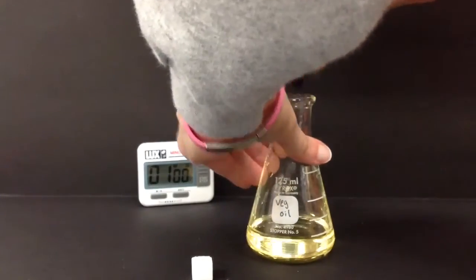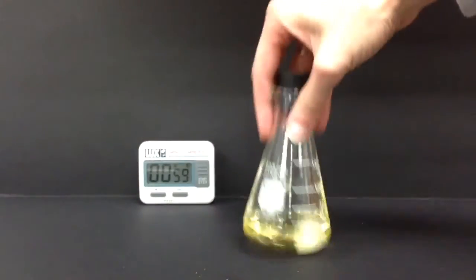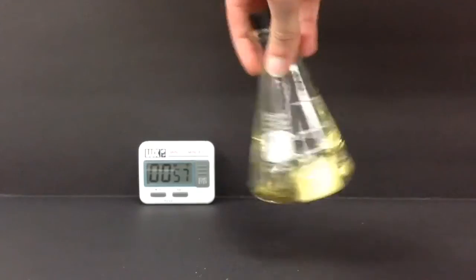The final solvent is vegetable oil. Watch closely and be careful with your observations. Some of the little specks you see are air bubbles from the swirling.